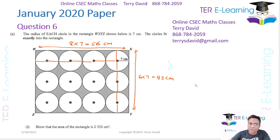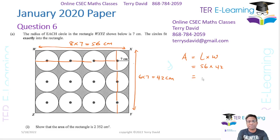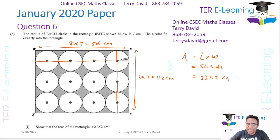So the area of this rectangle is going to be length multiplied by width, in which case it's going to be 56 multiplied by 42, and that's going to give me 2352 cm squared, which is exactly what they wanted us to show.